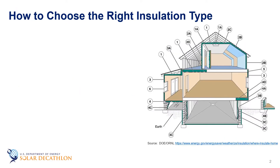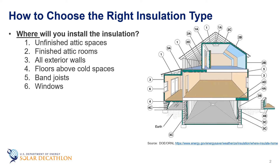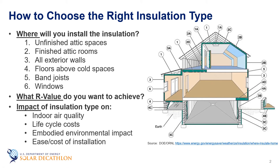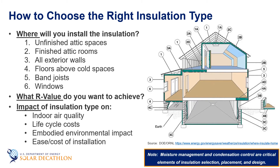When insulating a building, you can choose from many types of insulation. To choose the best insulation, you'll need to know where you want to install it and what R-value you want to achieve. Other considerations may include indoor air quality impacts, life cycle costs, recycled content, embodied environmental impacts, and the ease of installation.